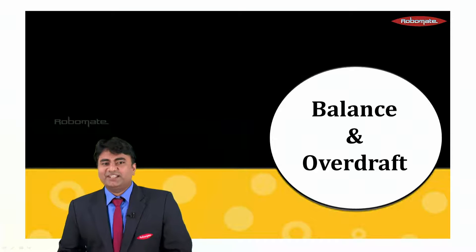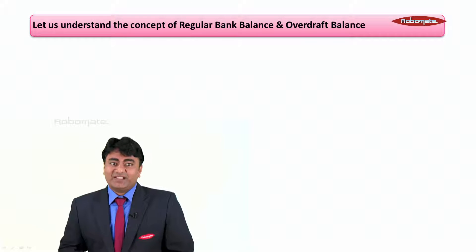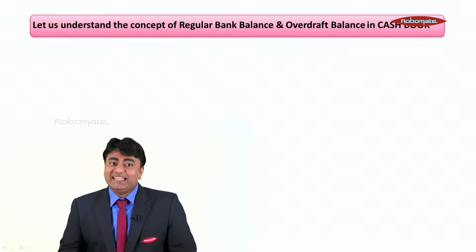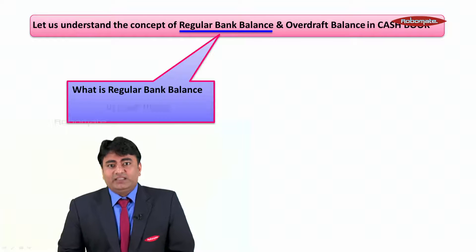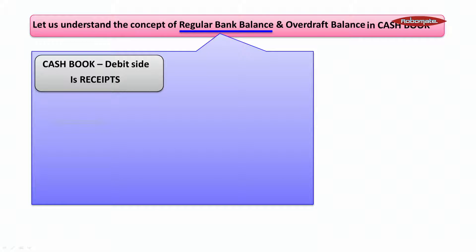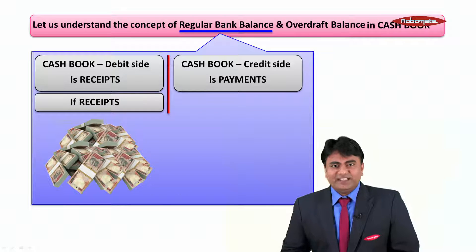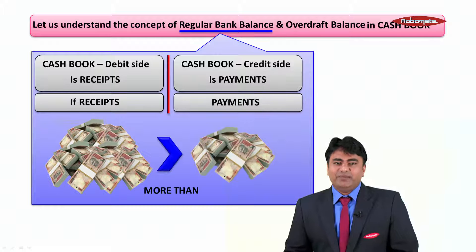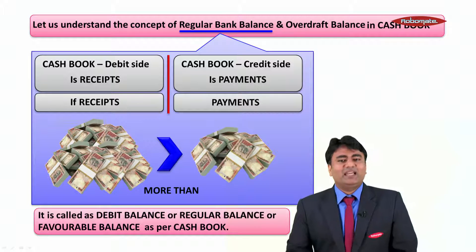The next part is understanding the balance and overdraft. Let us understand the concept of regular bank balance and overdraft balance in the cash book. The regular bank balance in the cash book: the debit side is receipts and the credit side is payments. If receipts are more than payments, it is called a debit balance, or regular balance, or favorable balance as per the cash book.